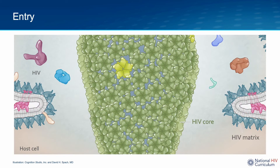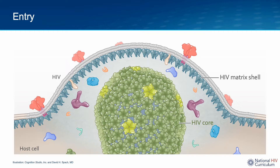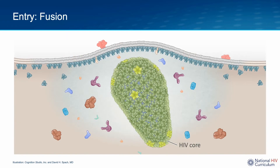As the process continues, the HIV membrane and the HIV matrix shell fully merge with the host cell membrane. This fusion is quickly followed by the migration of the HIV core — also referred to as the HIV capsid or HIV capsid core — into the host cell. With the full merger of HIV and host membranes, the HIV core has moved entirely inside of the host cell. At this point, the third and final phase of HIV entry, fusion, is complete.